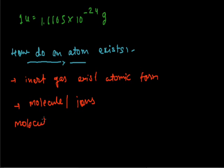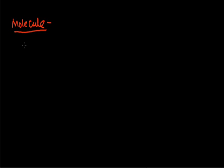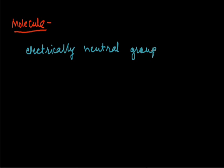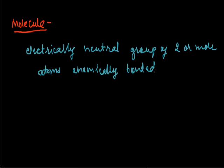To achieve stability, atoms form molecules or ions. So, what is a molecule? A molecule is an electrically neutral group of two or more atoms chemically bonded together by means of attractive forces.